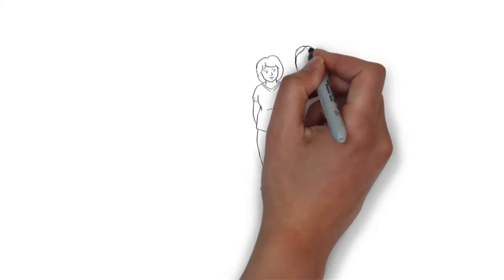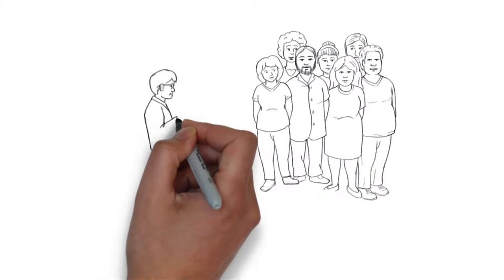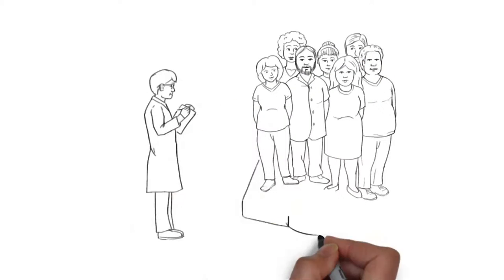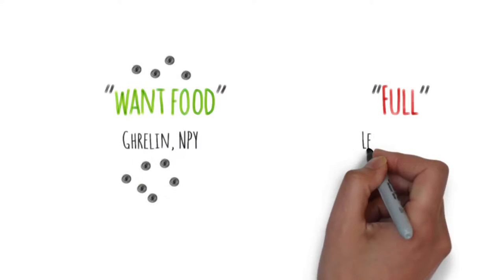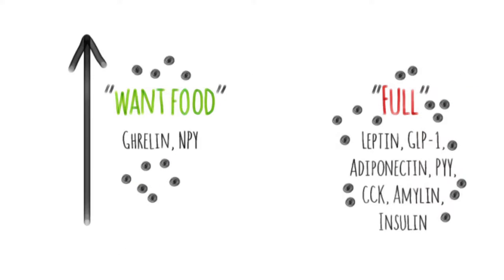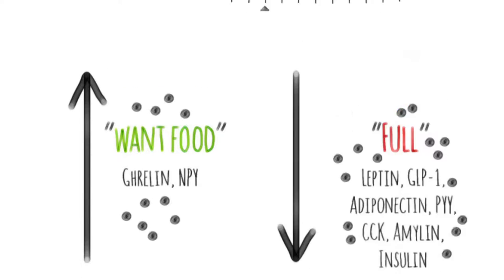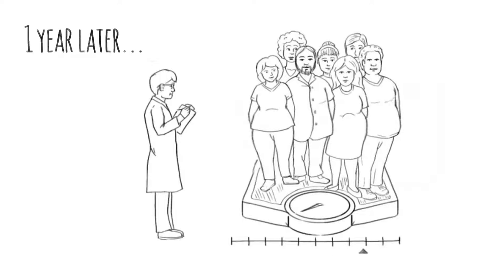To look at this more carefully, scientists put people on a strict diet plan and in 10 weeks they lost an average of 20 pounds. Scientists also measured their appetite hormones and found that after weight loss, these people had higher levels of the hormones that make you want food and lower levels of the hormones that make you feel full. Scientists followed them for a year and found that despite gaining most of their weight back, the changes in their hormones persisted and did not return to their pre-weight loss levels.